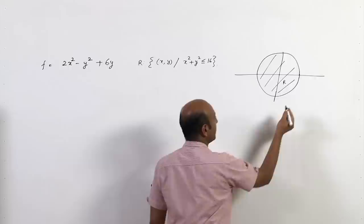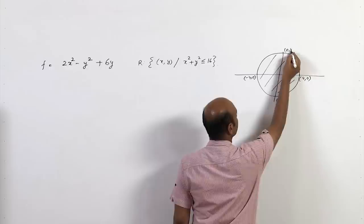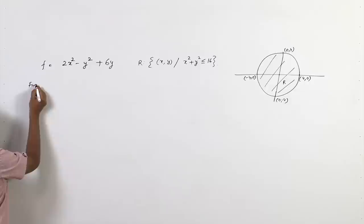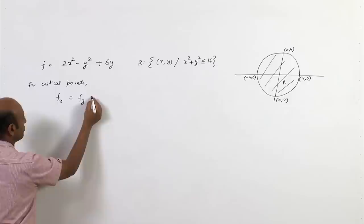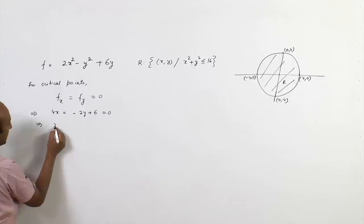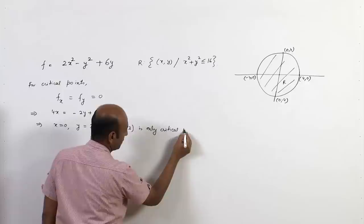The region R is a disk of radius 4. Key points on the boundary include (4,0), (-4,0), and (0,4). For critical points, we set f_x = f_y = 0, giving 4x = 0 and -2y + 6 = 0, which implies x = 0 and y = 3. So (0,3) is the only critical point.